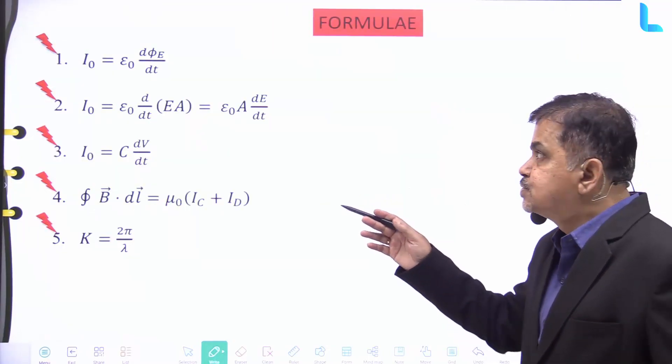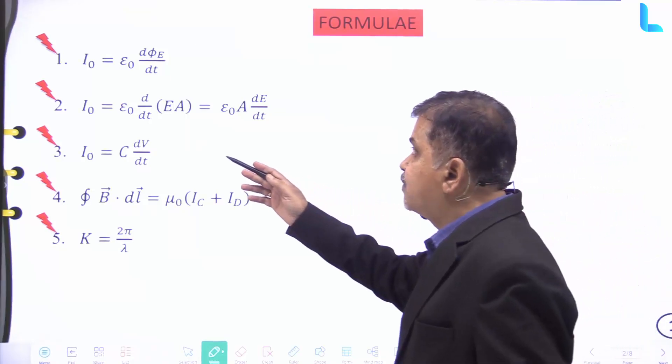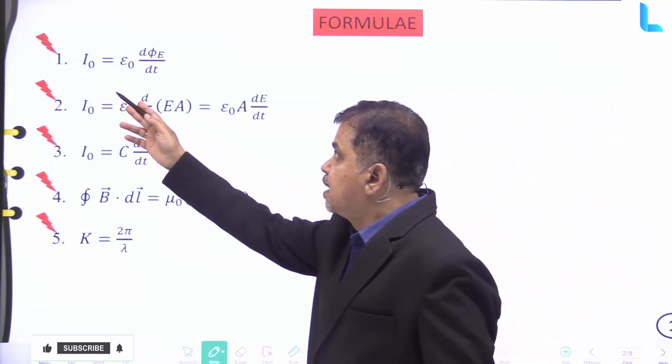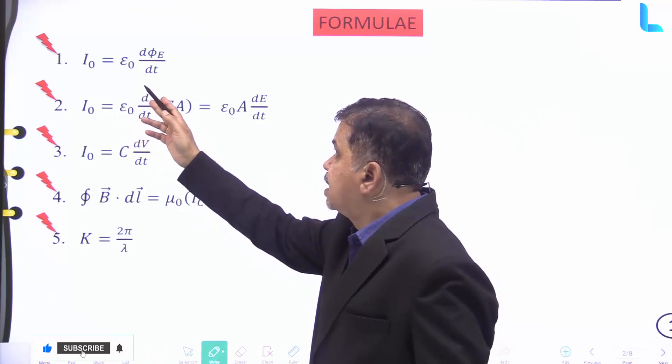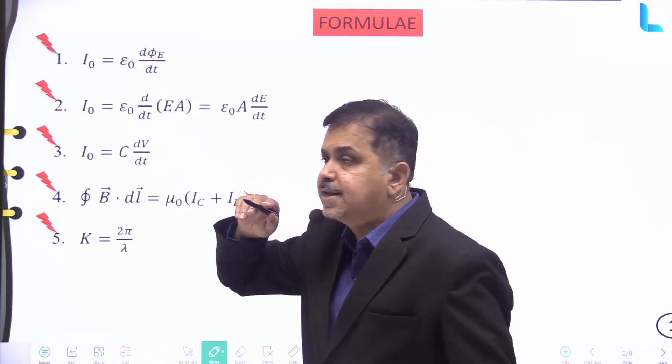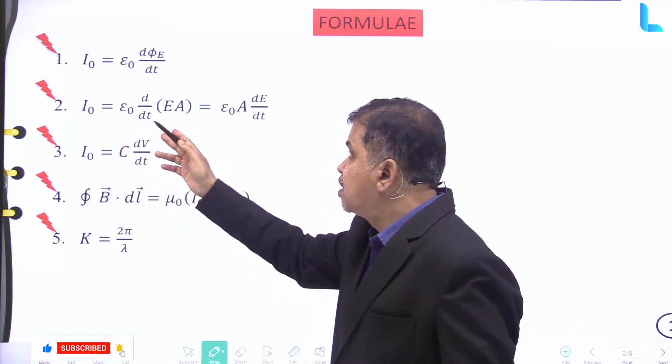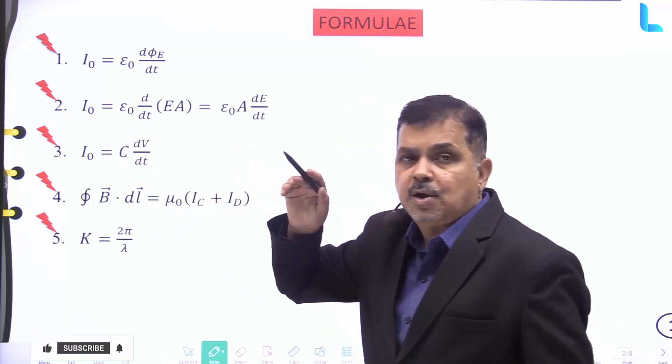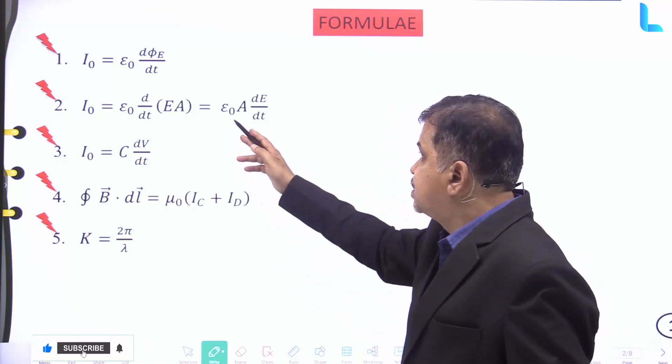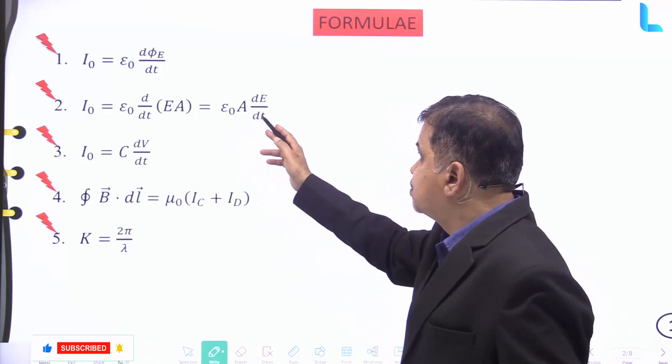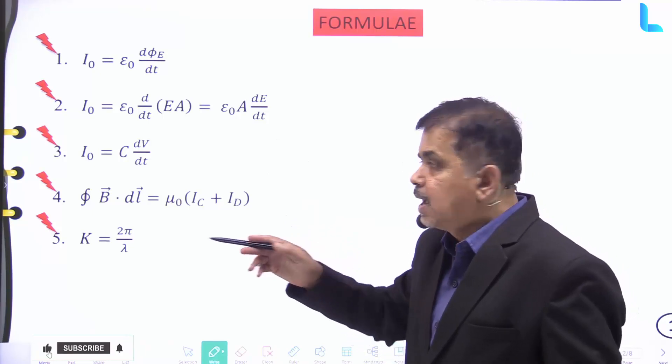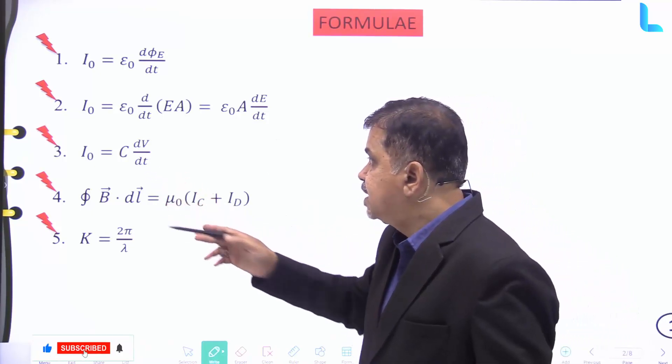Given here we have certain important formulas. Written i₀ equal to ε₀ into dΦ divided by dt. Number 2: i₀ is also equal to ε₀ into d by dt of EA, and that is equal to ε₀ into A into dE by dt. And i₀ equal to C into dV by dt.